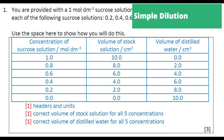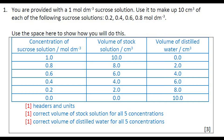First, we need to calculate the volumes needed for our simple dilutions. According to instructions, we need to prepare 0.8, 0.6, 0.4, and 0.2 mol per dm³ solutions from a 1 mol per dm³ solution. So the 1 mol per dm³ solution is our stock solution, and we will make all solutions from that one stock solution. To learn how to calculate this, please refer to my previous video on how to perform simple dilutions.